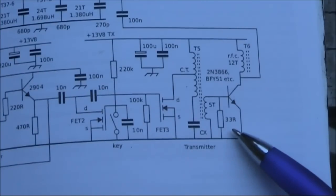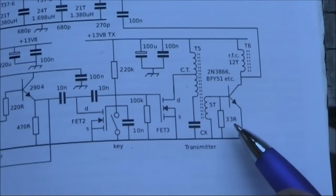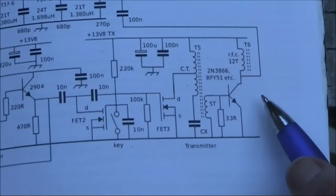Across the base to the earth of the final transistor is a 33 ohm resistor. Supposing we wanted to get a bit more out of that transistor, you might want to increase the 33 ohm resistor to say 47 or 68 ohms, and that may get you a bit more output power.